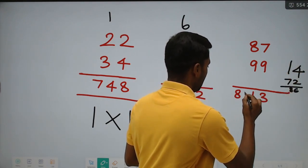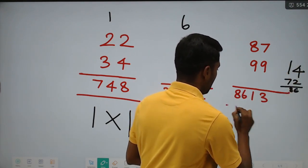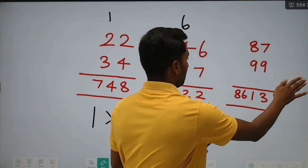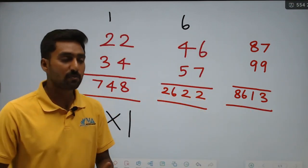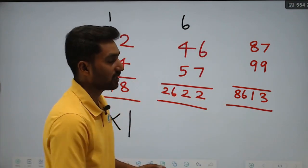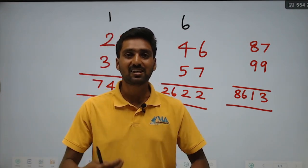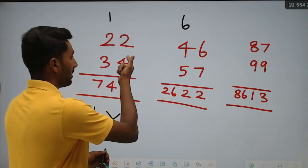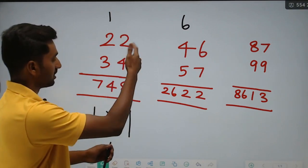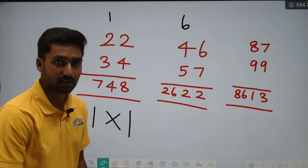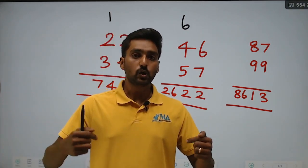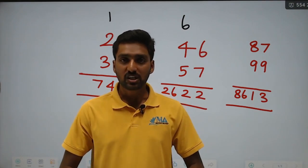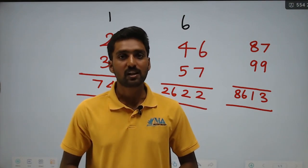I hope it is easy, right? So in this way, we multiply in one line — the short trick. The more problems you practice, just look at this: we solve them immediately. Straight, cross, straight — one line short trick. Watch more videos on the Masters Academy YouTube channel.